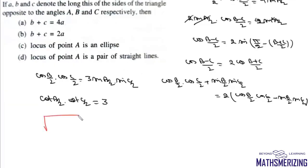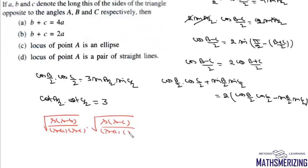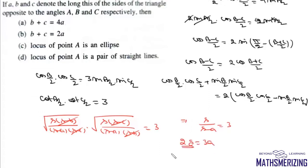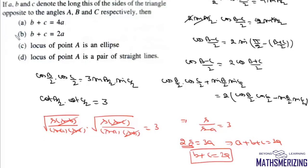From the properties of triangles, we know cot(B/2) = s(s-b)/Δ and cot(C/2) = s(s-c)/Δ. Substituting and simplifying, we get s/(s-a) = 3, which gives 2s = 3a. Since 2s = a + b + c, we get b + c = 2a, which is option B.